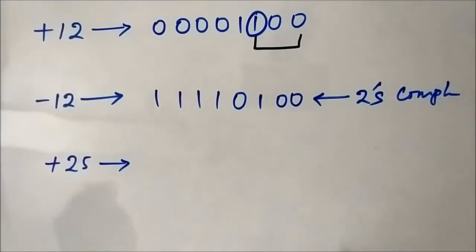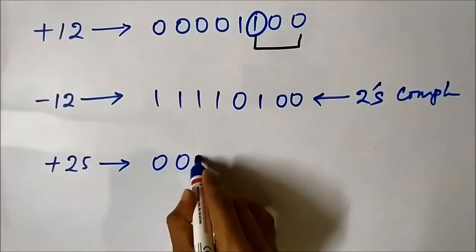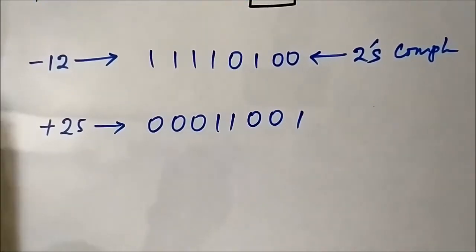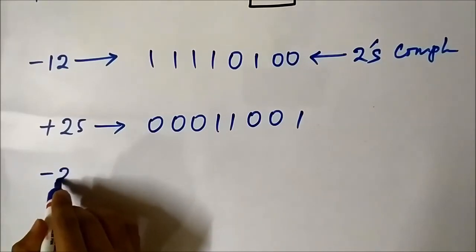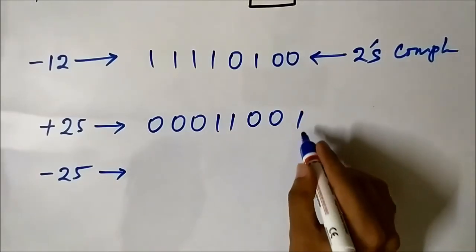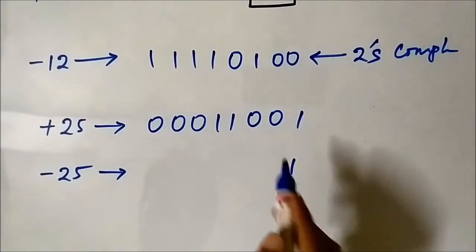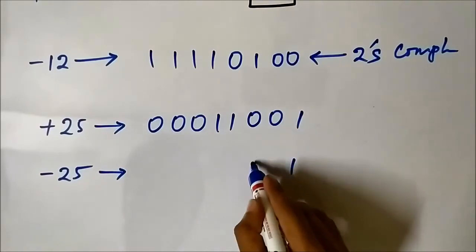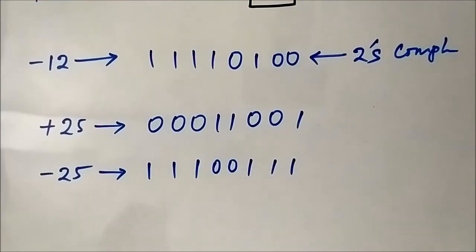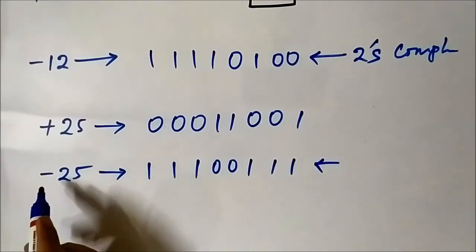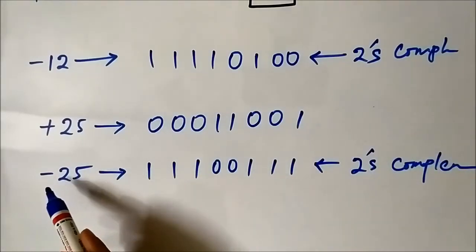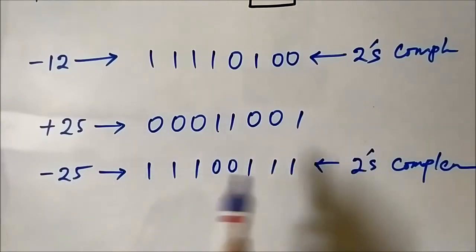Similarly, let's take +25. The positive number +25 is represented as 00011001 in 8-bit format, in the same way across sign magnitude, 1s complement, and 2s complement systems. To find -25 in 2s complement, we calculate its 2s complement: the first bit (LSB) is 1, so we copy it as-is, then invert the remaining bits to get 11100111. This is the binary representation of -25 in the 2s complement system.